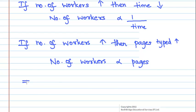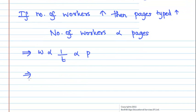Hence, we can write w is directly proportional to 1 by t which is directly proportional to p. From this we can write w t is directly proportional to p and we can write w t divided by p is equal to constant. Here the constant is k.